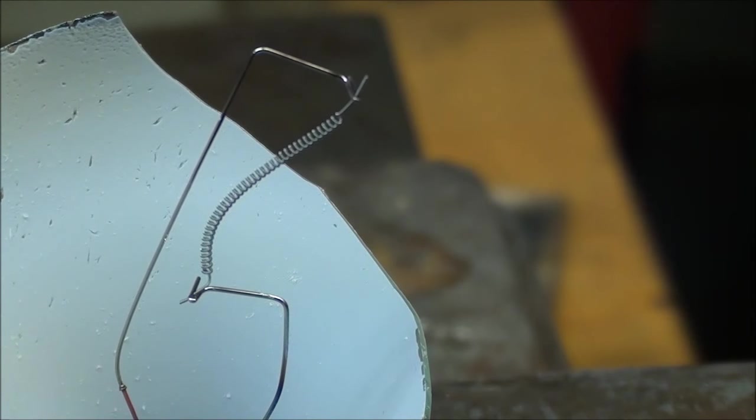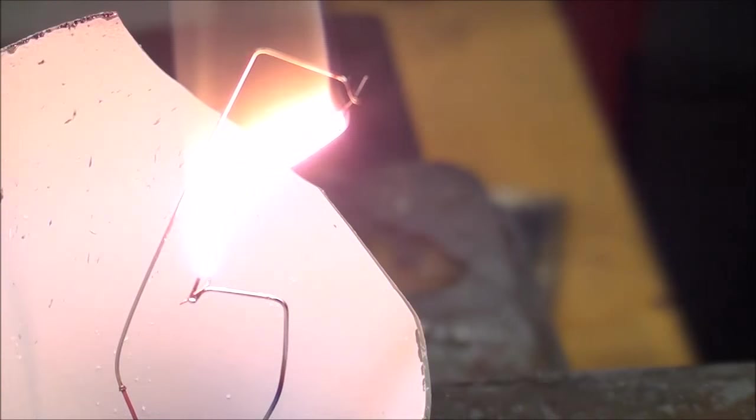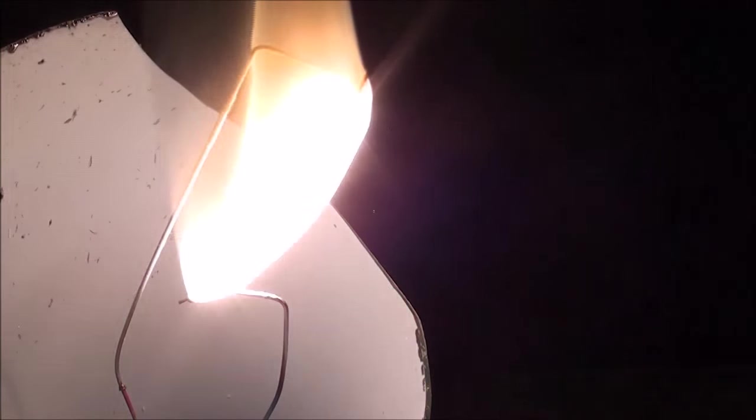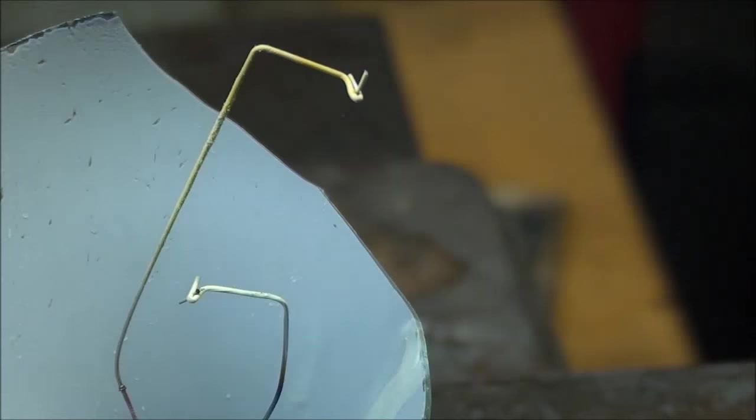Now as I turn the power on, watch the filament. I'm going to increase the voltage very slowly until you see it start to glow, and then I'll pump it up to the full amount. You'll see that it'll turn incandescent, that is white hot, and then instantly burn out. So here we go. And that's it. It burned out.